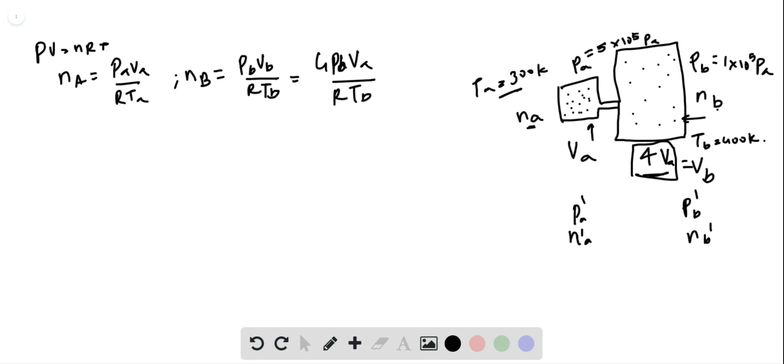Notice that the temperatures and the volumes remain constant, so we did not care for them. Using the same formula again, we will see that NA dash equals PA dash VA by R TA and NB dash is 4 PB dash VA by R TB.